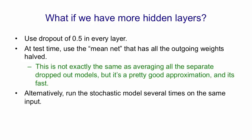We could run lots of stochastic models with dropout, and then average across those stochastic models. And that would have one advantage over the mean net. It would give us an idea of the uncertainty in the answer.